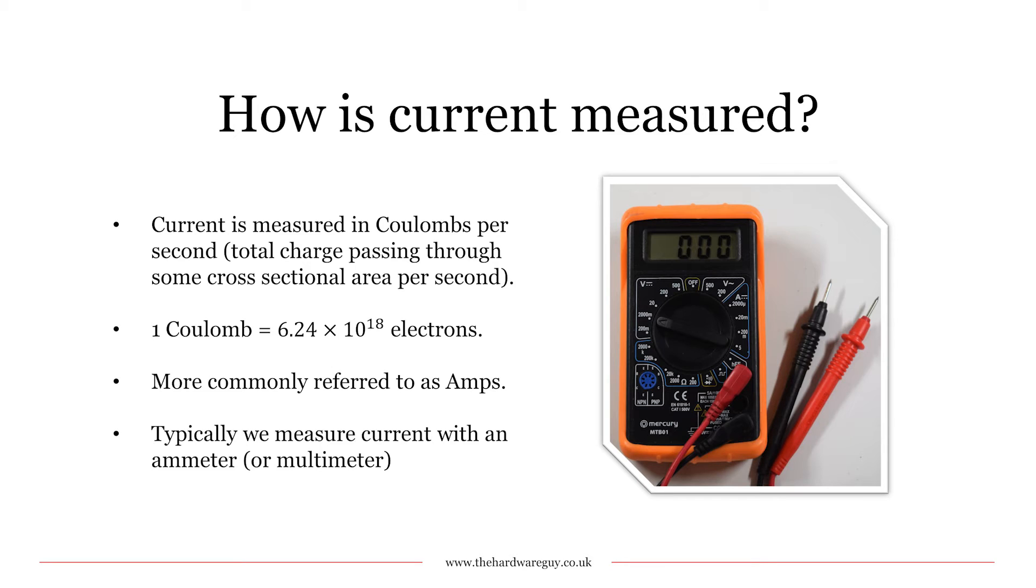Current is measured in coulombs, and coulombs measure the quantity of electrons flowing per second. 99% of the time, current is almost always referred to in amps. This is because we assume that one coulomb is equivalent to one amp. So what we're essentially saying is one amp represents a certain quantity of electrons flowing through a given wire per second.